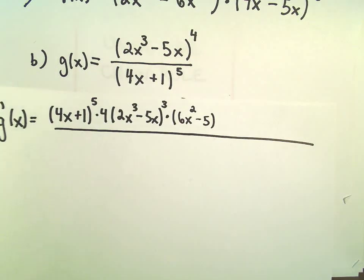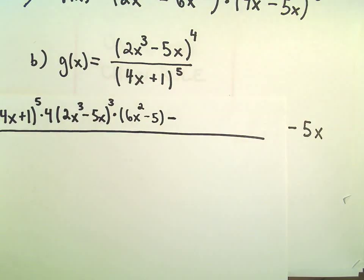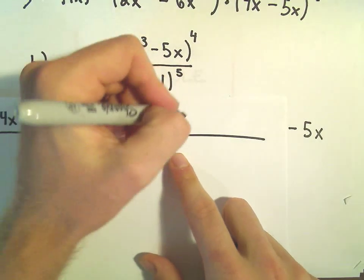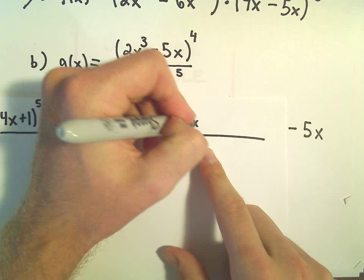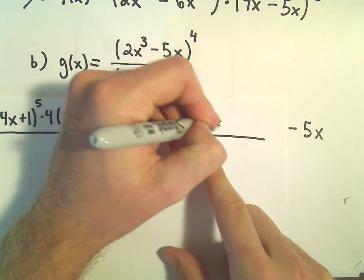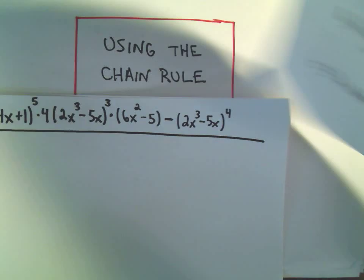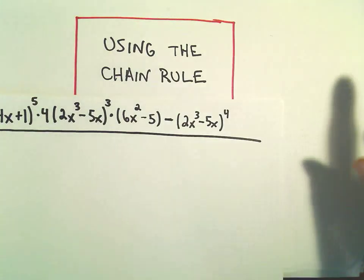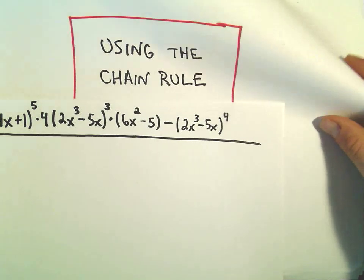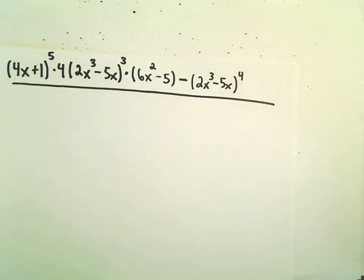Now we'd have to put a minus sign in there for our quotient rule. So then it says we take whatever's in the numerator, so 2x cubed minus 5x to the 4th, and then we have to multiply by the derivative of the denominator.